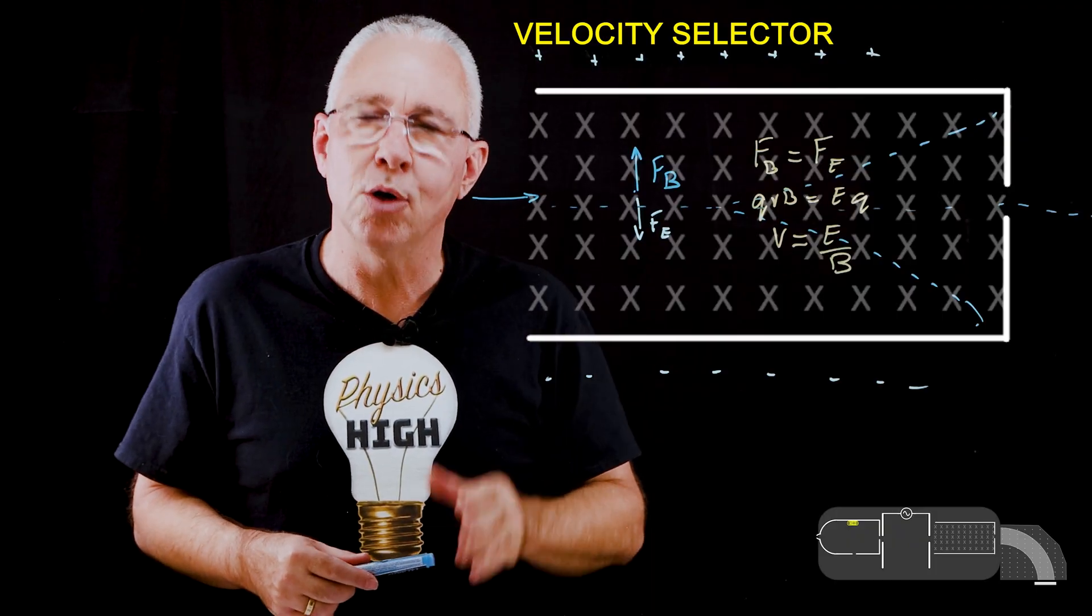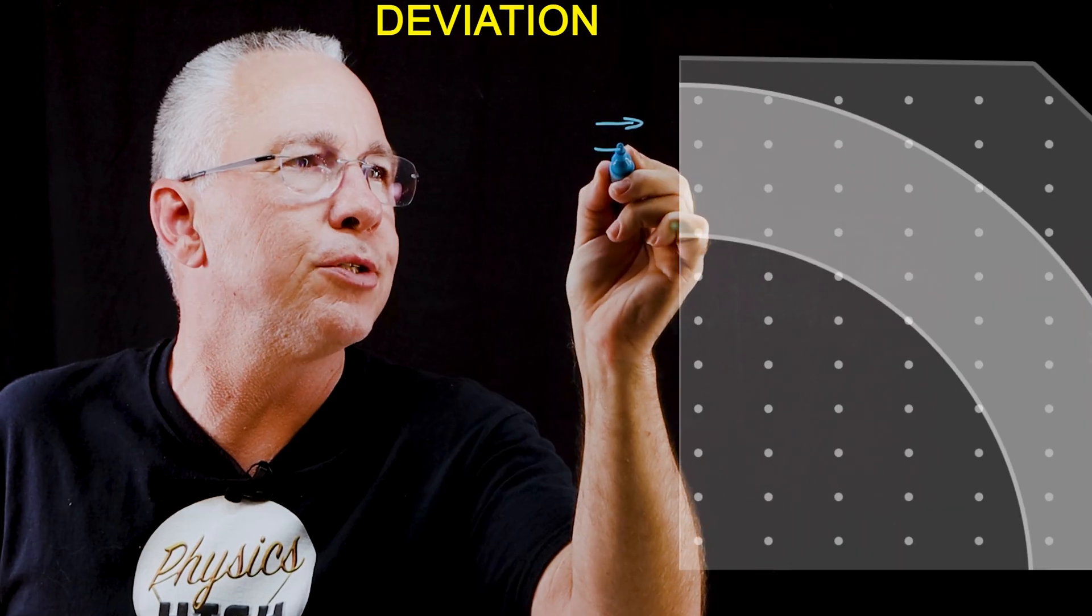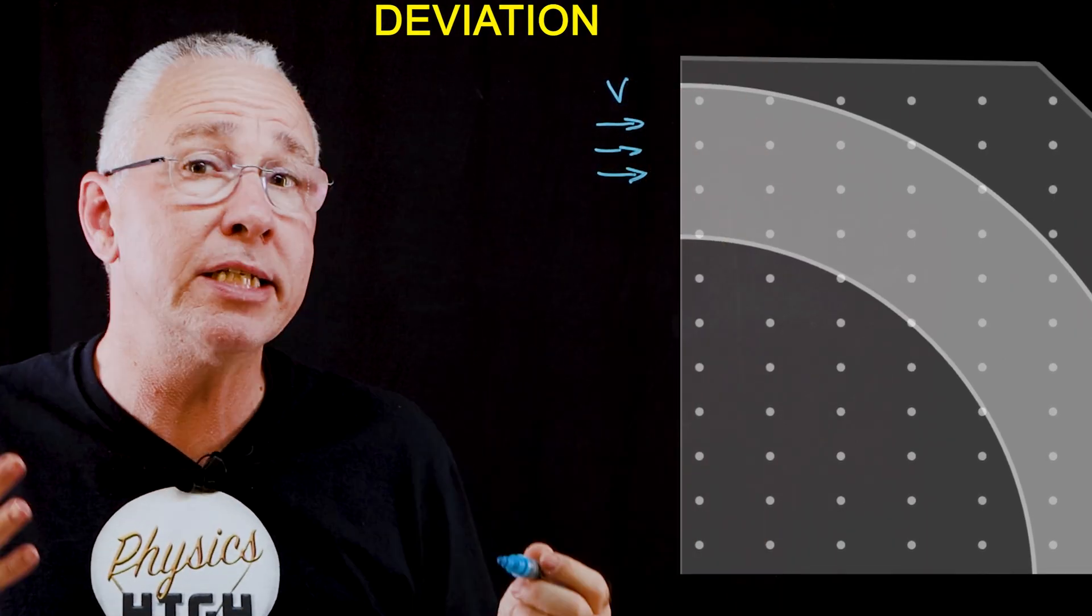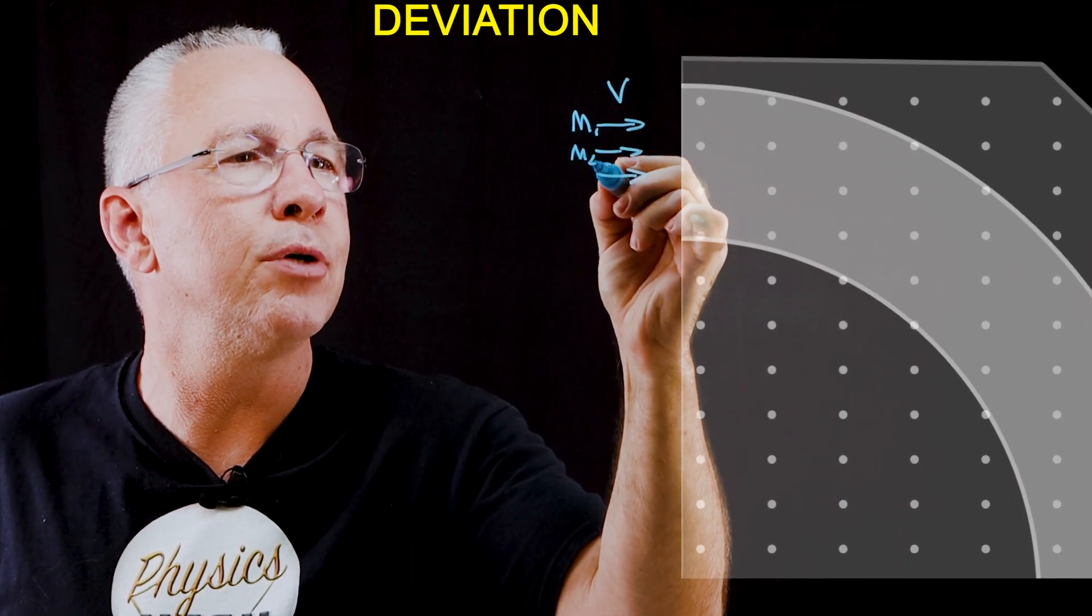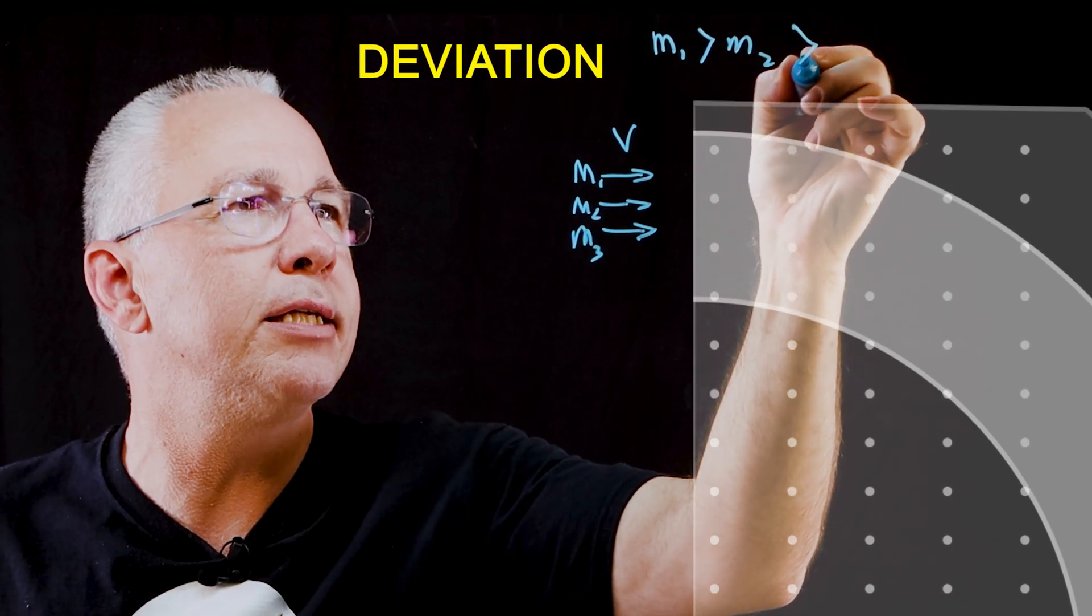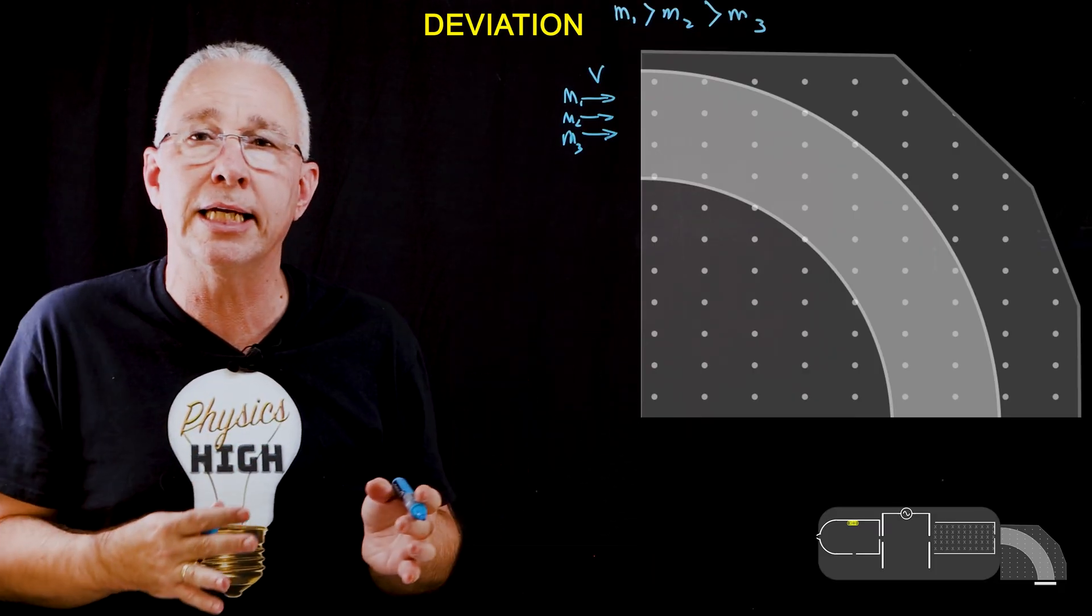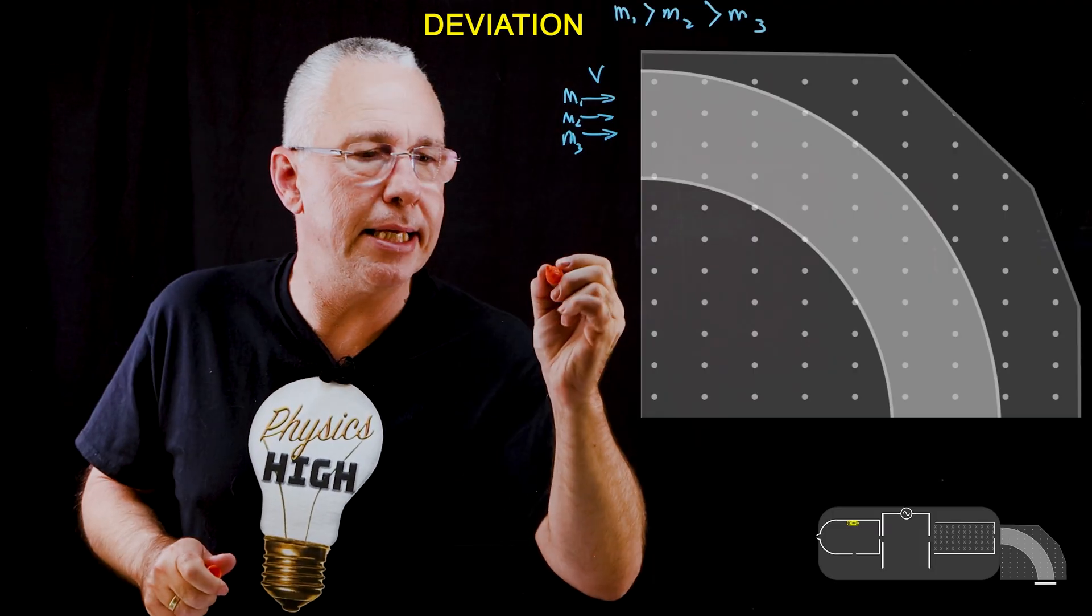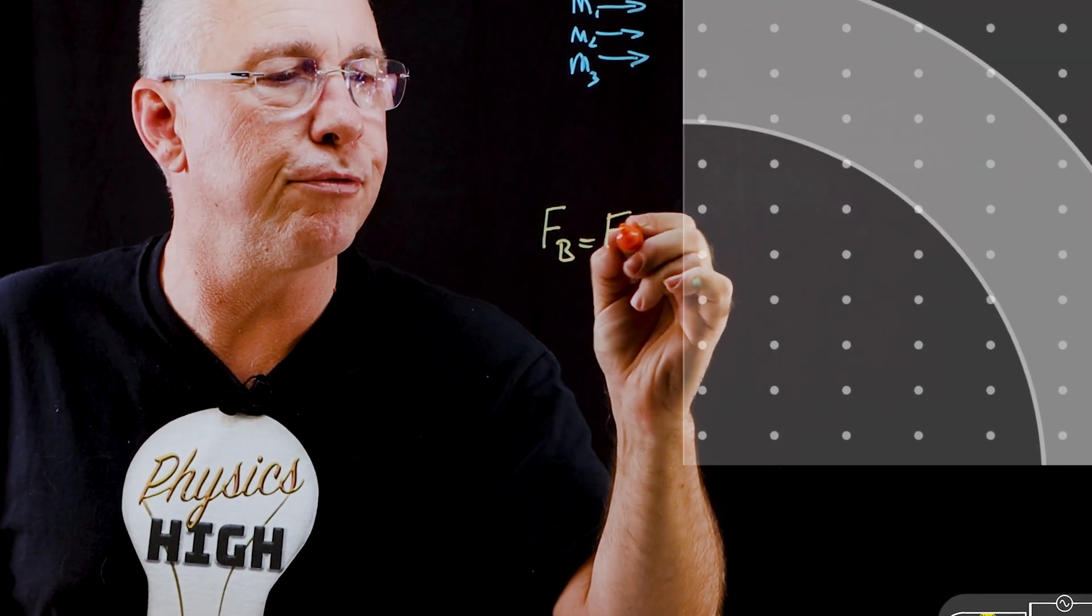Let's now move on to the next stage, deviation. So now what we end up having is a whole array of different particles entering our field, but they all have the same velocity. What differs, however, is that they will have different masses. So we might have m1, m2 and m3. Now I'm going to make that m1 is greater than m2 and is greater than m3. Now, as they enter that field, they will experience a force that is perpendicular to their velocity. And that means we have centripetal motion. That means the force due to the magnetic field, F of B, is equal to the centripetal force that's being applied.